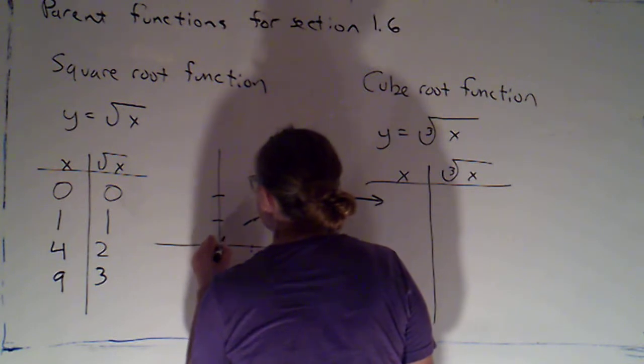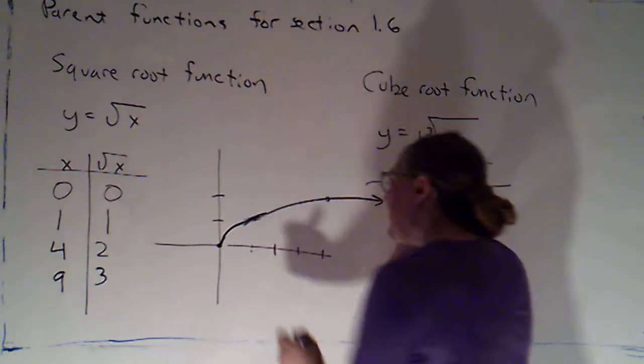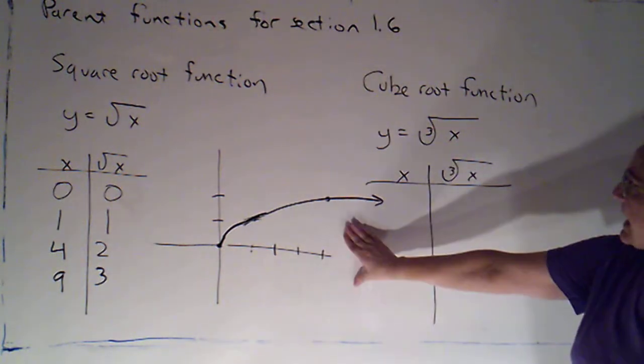So each time I go up 1, I'm going over a little bit more, and so it's getting less steep as we go. So the square root function looks something like this. It's actually a little really steep right in there. I'll adjust. Okay, excellent.